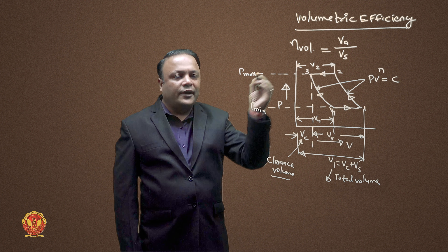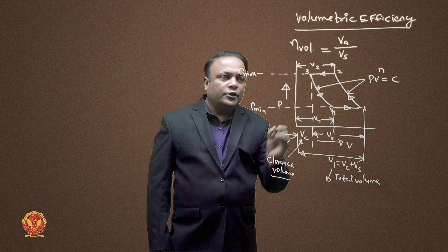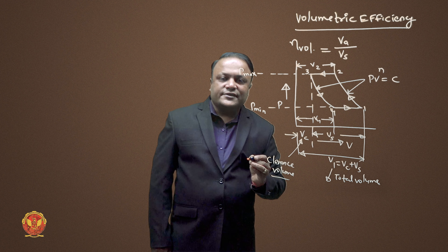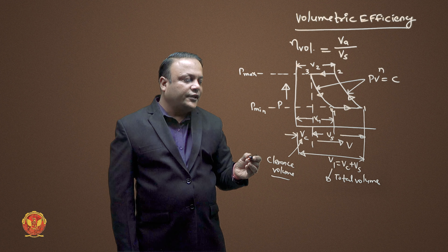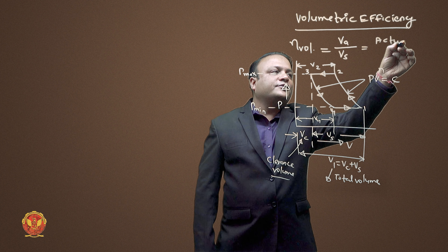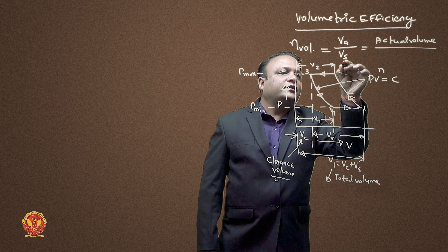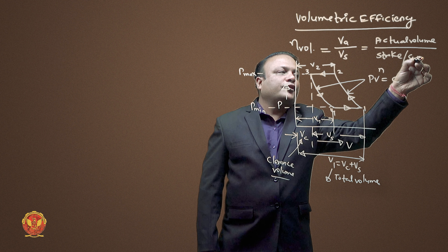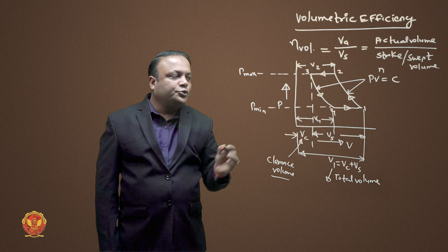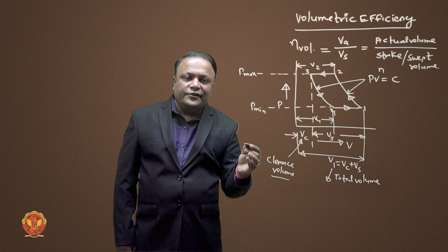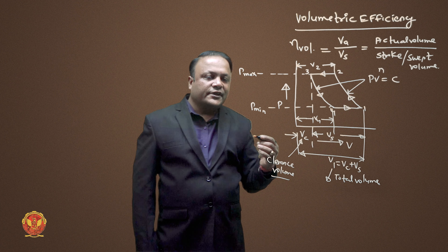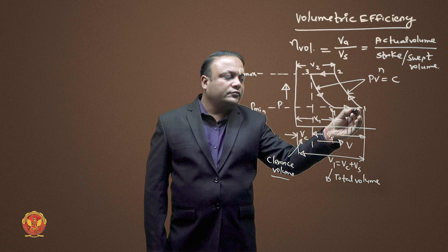After delivery, there is the clearance space, then polytropic expansion from 3 to 4, followed by suction — and this way the cycle continues. The actual volume corresponds to what is available at point V1 minus V4, and the stroke or swept volume VS is the theoretical volume. We talk about atmospheric conditions and how much volume, pressure, and temperature we had before compression.